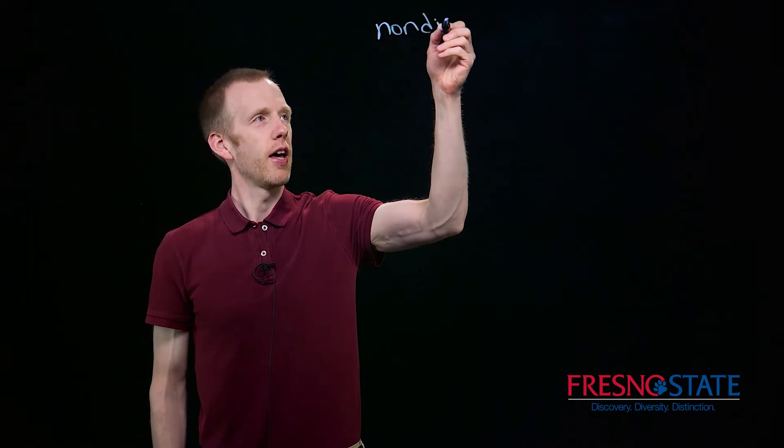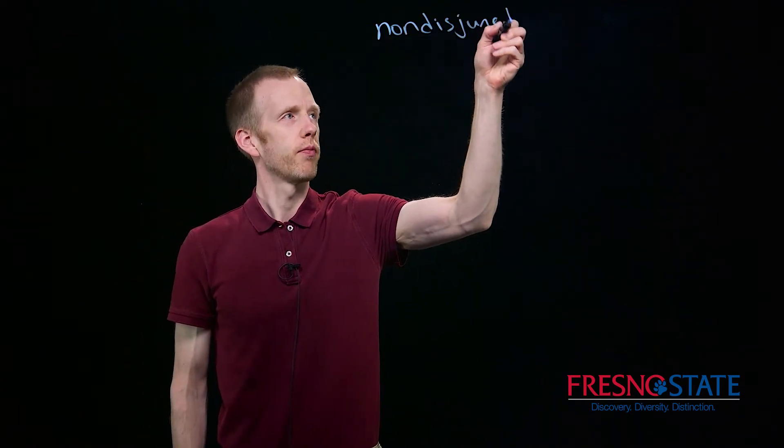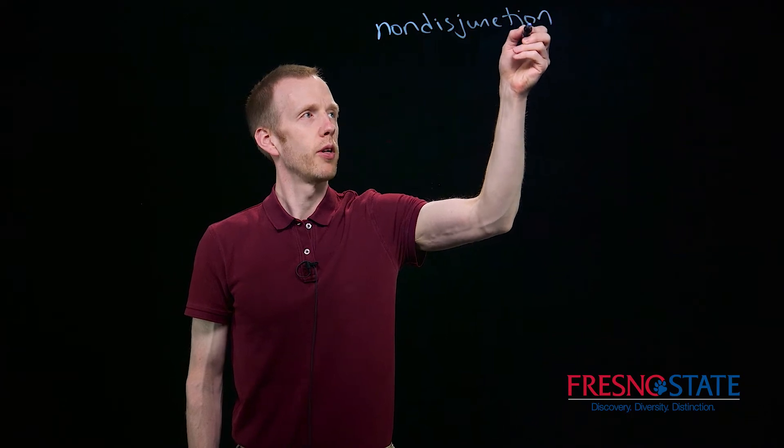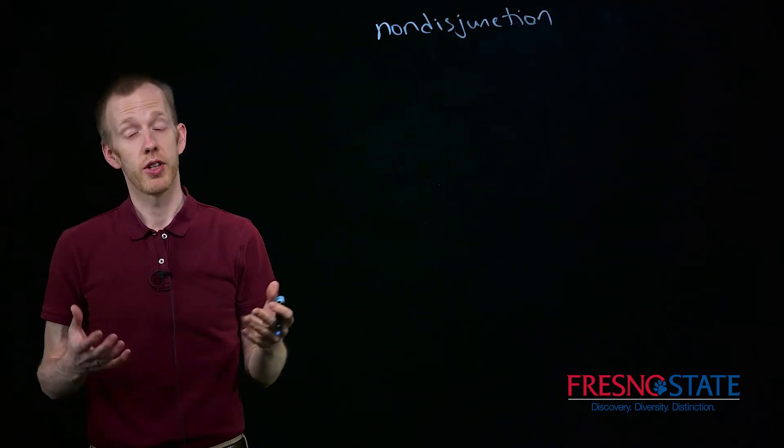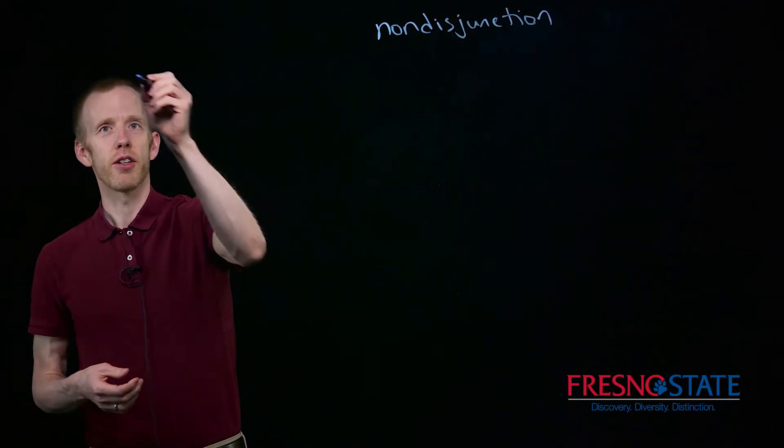I want to talk about the process of non-disjunction, and this is a process that happens during meiosis where sister chromatids don't separate or segregate properly during cell division.